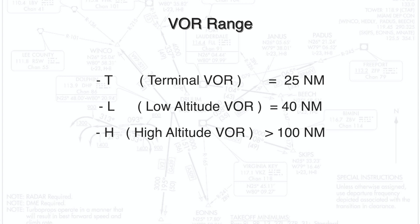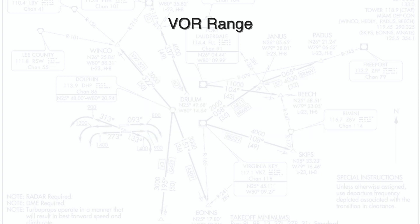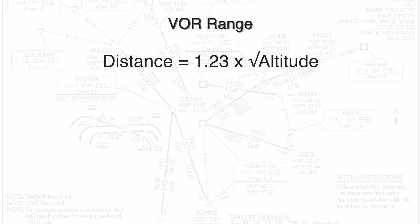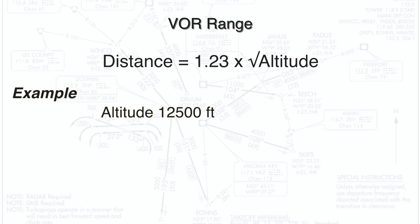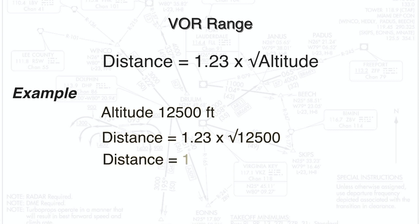Now let's see how far away we can receive a VOR signal. You can use this formula — the altitude is in feet. For example, if we are flying at 12,500 feet, the distance in range would be 1.23 times the square root of 12,500, which gives us 137.5 nautical miles. So this is the maximum distance from a VOR at which we can still receive a signal.